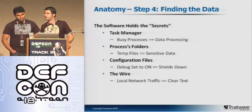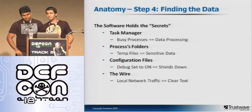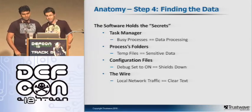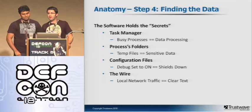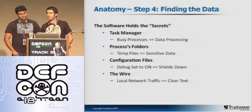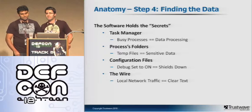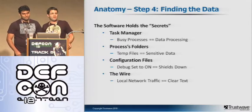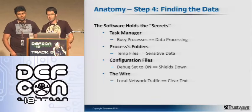Step four: finding the data. The software holds the secrets. If you're on a system looking for where data is stored, Task Manager is a really good tool — you can see which processes are very busy, which is usually where data is being processed, and that's where you hook your memory dumpers in. Temp files still contain a lot of data. Configuration files with debug parameters — turn the debug parameter on and sure enough it starts logging all activity to the hard drive, typically there for troubleshooting but it makes the attacker's life easy. And the wire — in most environments, even financial institutions, data on a local network is often not encrypted.